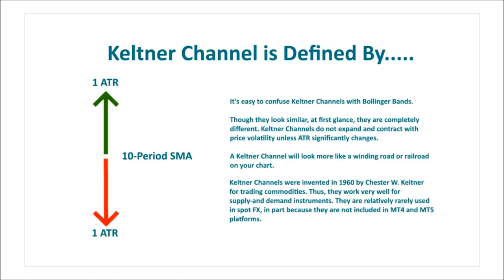Keltner channels were invented by Chester W. Keltner in 1960 for trading commodities. They came 22 years after Donchian channels and around 25 years before Bollinger Bands. The Keltner channel is defined by the outer bands being one ATR from a 10-period simple moving average. This makes the indicator particularly suitable for any ATR-based trading system.